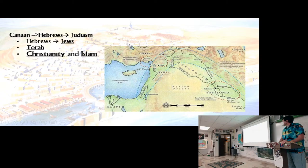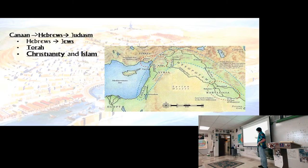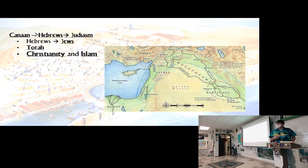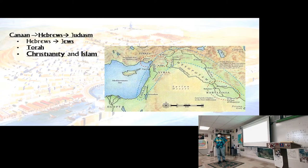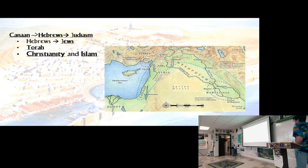Canaan is right here — present-day Israel, Lebanon, Syria, Jordan — this area in the Fertile Crescent. The Hebrews eventually became known as Jews, and their holy book is the Torah. This is the basis — or more accurately the roots — of both Christianity and Islam. Right here in this Fertile Crescent we've got the Hittites, Phoenicians — what an area.